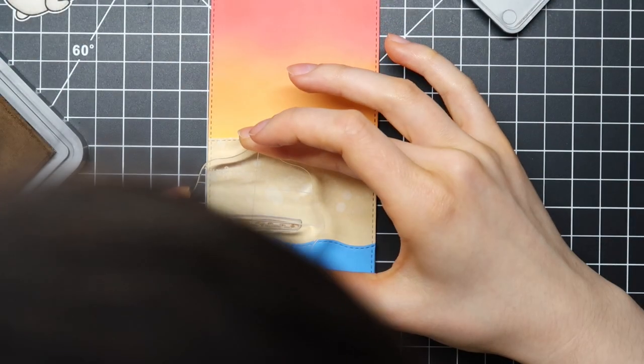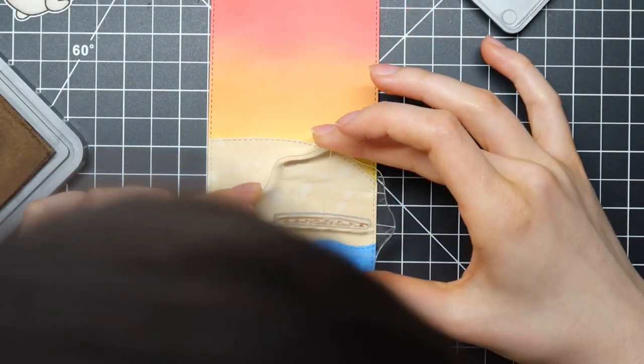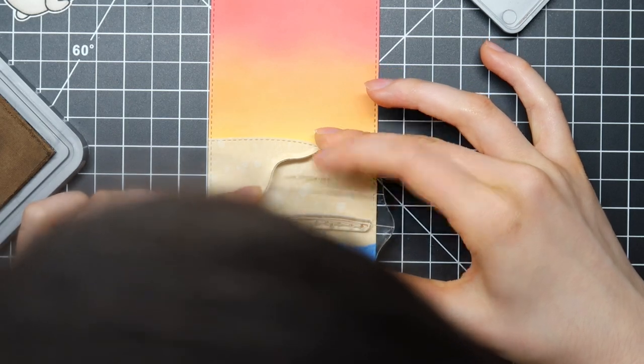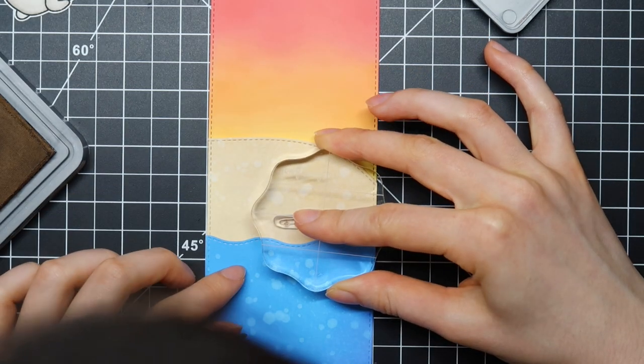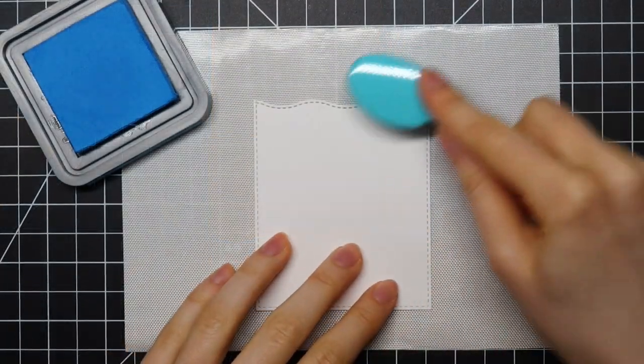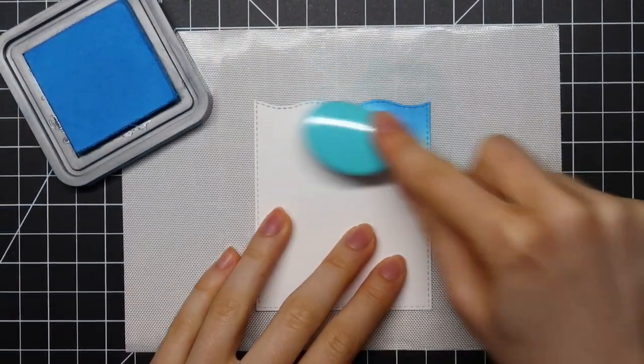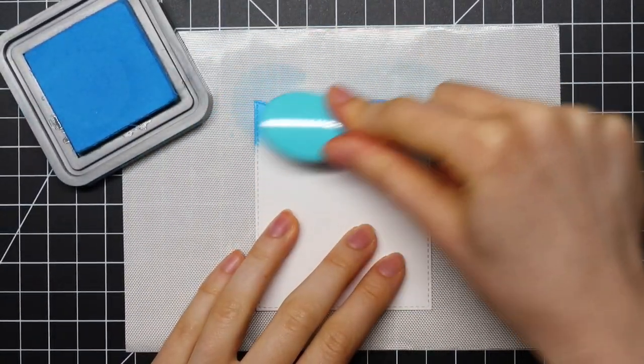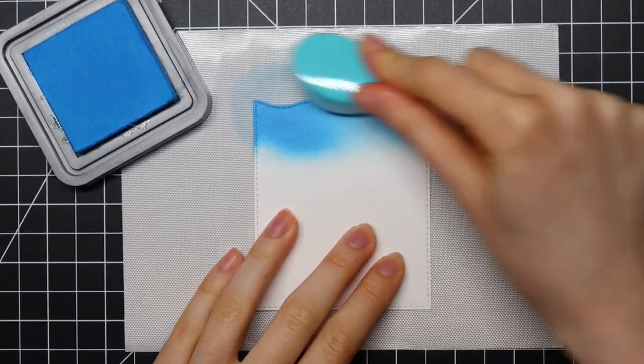I'm using vintage photo to stamp this kind of texture in the sand. And as you can see, I actually die cut this piece out of craft cardstock first. But then I decided I wanted to do some ink blending so then I die cut that once more out of regular white cardstock.